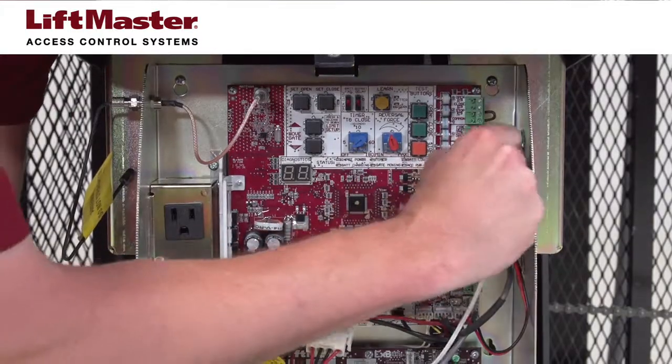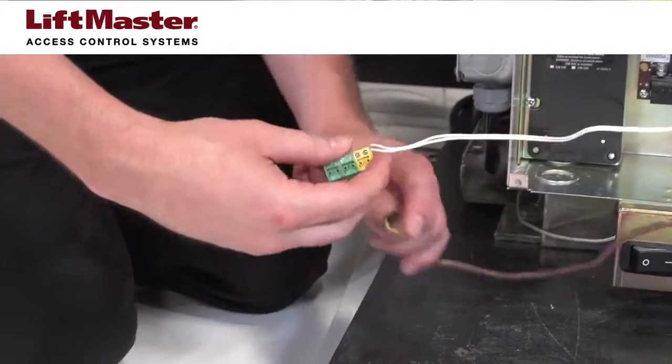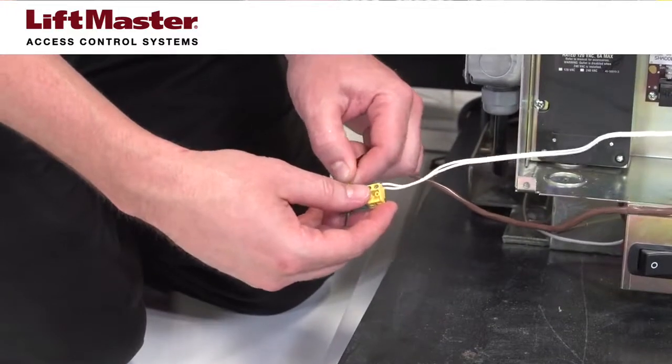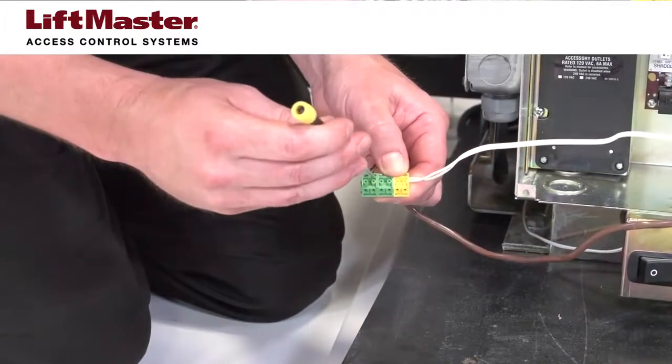Connect the other end of 2 conductor wire from telephone entry to the gate operator soft open input terminals. Polarity is not important.